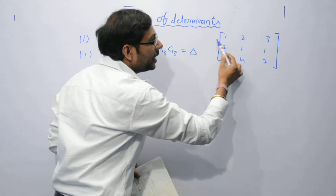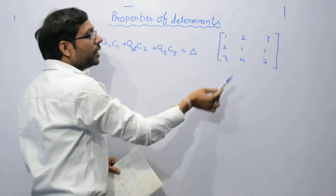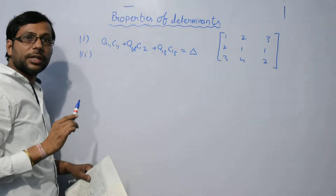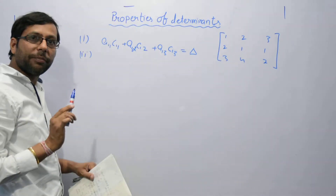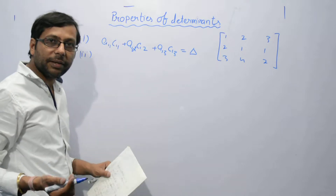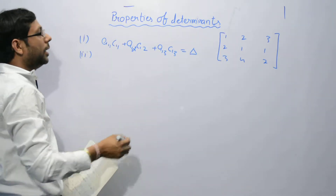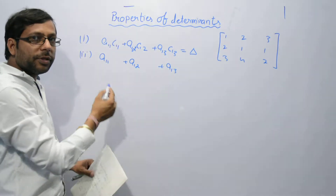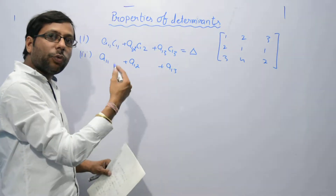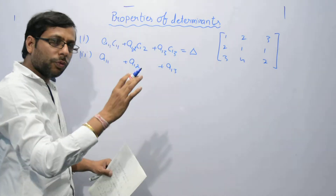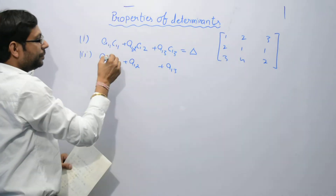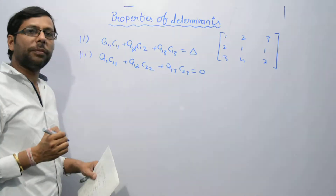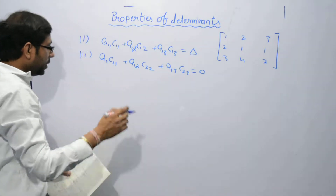The second property is: if you take the elements of one row and the co-factors of another row, then the sum will not be the determinant — it will be zero. For example, A(1,1) plus A(1,2) plus A(1,3), using the first row elements with co-factors of another row, will give zero. This is the second property.